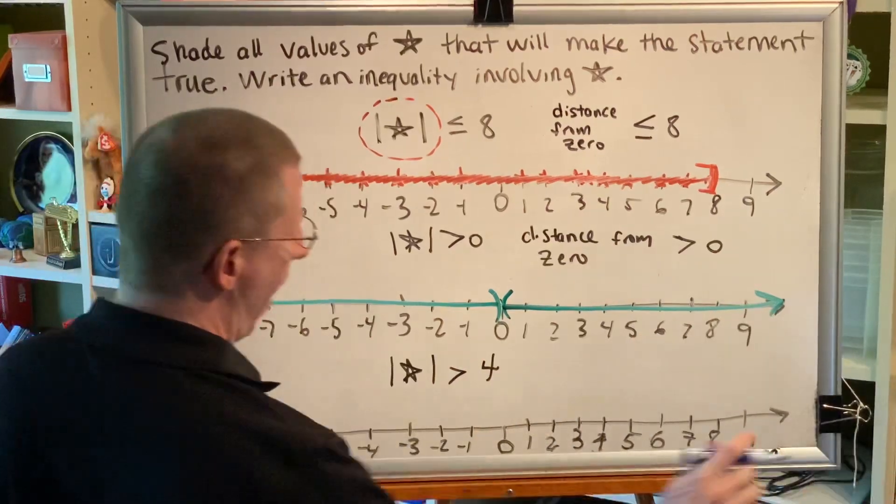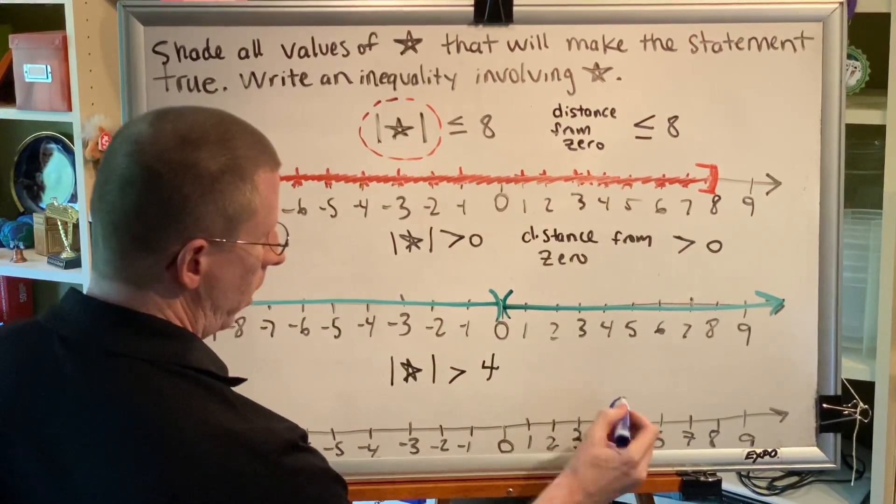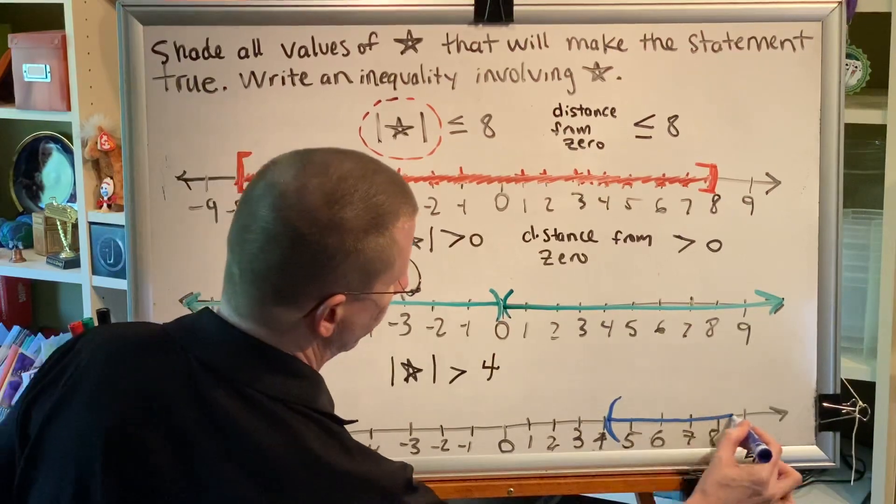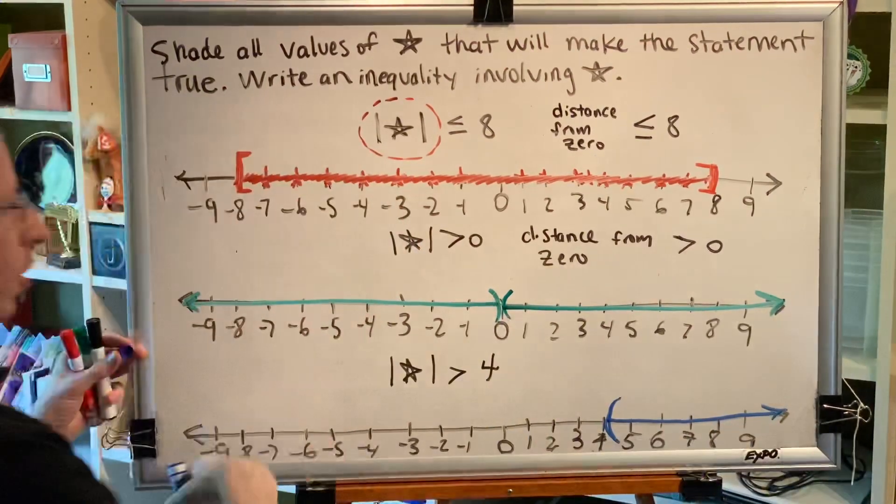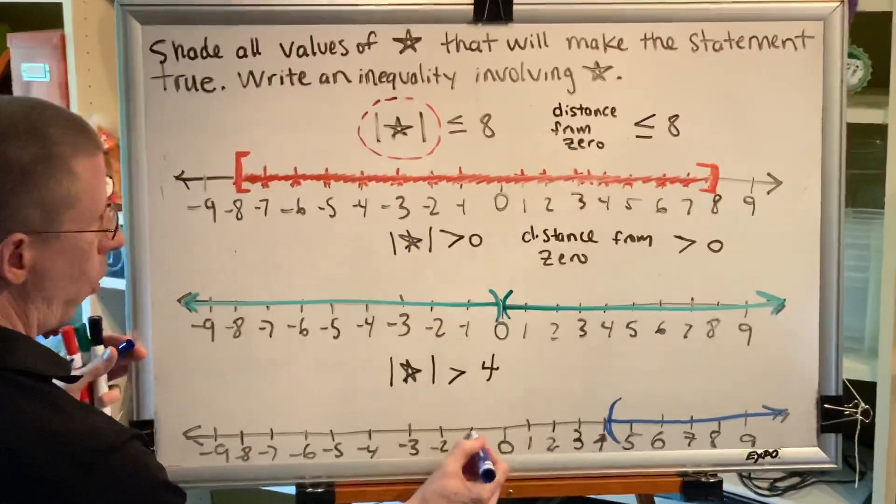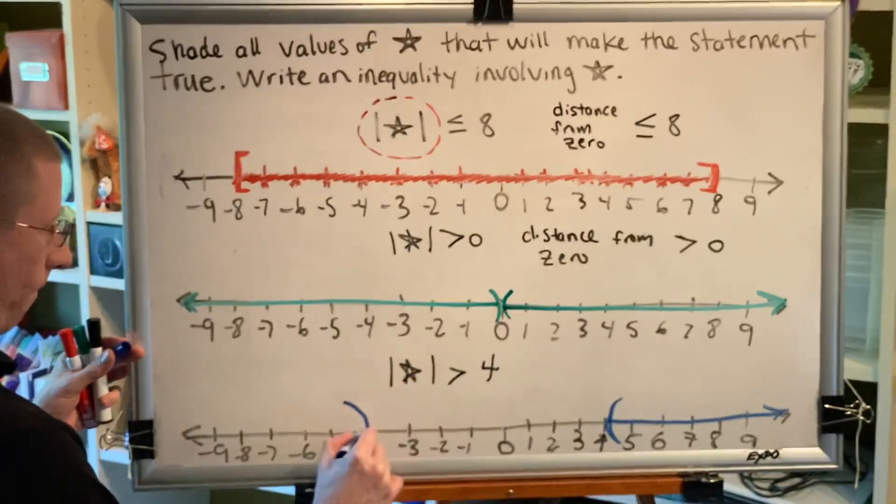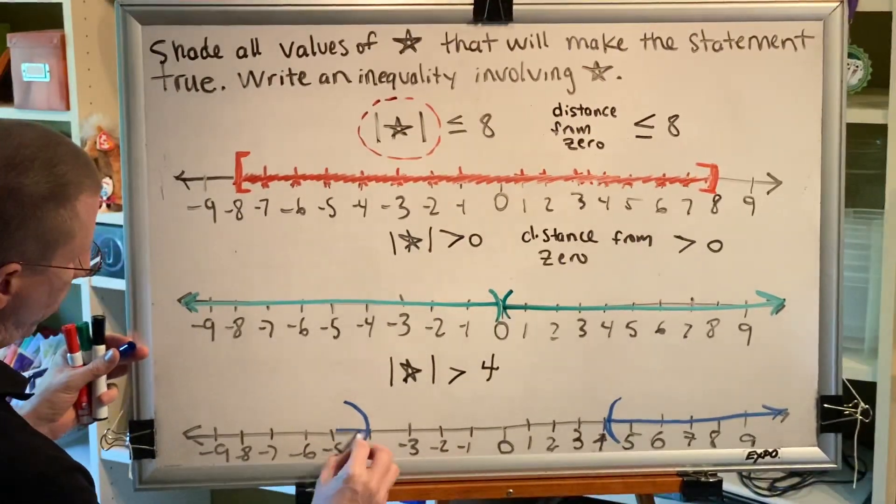And so we would shade like this. But you can just as easily go the other way. Start at 0 and go 1, 2, 3, 4, and anything beyond that would also be greater.